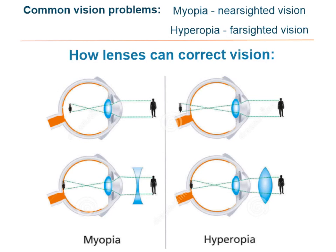Nearsightedness can be corrected with the use of a diverging lens. This will allow the image to be focused on the retina where it should be.